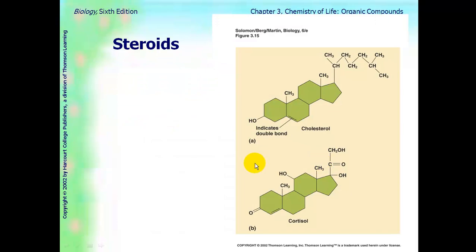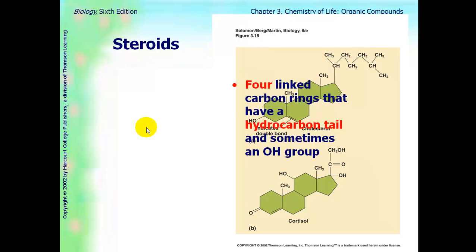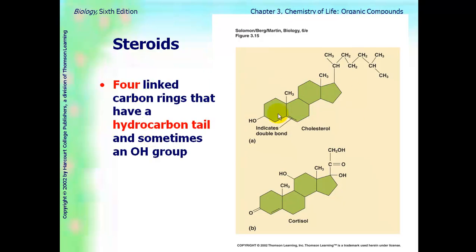Another class is steroids. Here is a steroid, cholesterol, and cortisol is another steroid. Notice the structure. It's very distinguishable. It is composed of four linked carbon rings that have a hydrocarbon tail, and sometimes they have a hydroxyl group attached to it. They're important in signaling between cells.